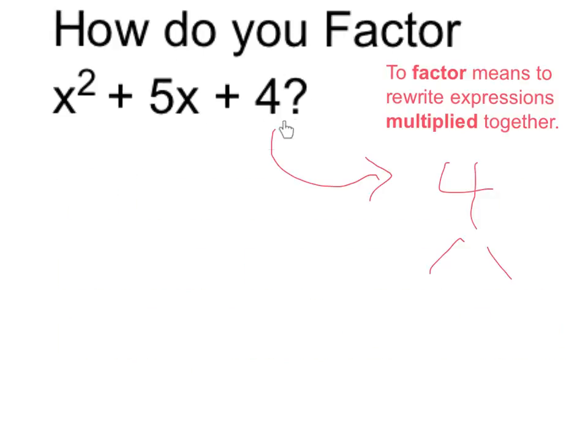To do that, I'm going to look at the constant term, in this case 4, and I want to find factors of 4 which are going to add up to 5. As factors of 4, it could be 2 times 2, or 4 and 1.